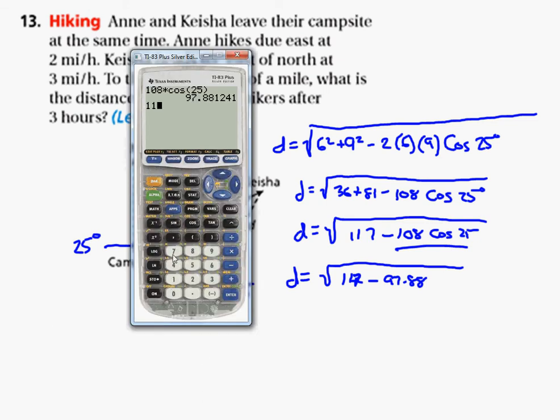Let's subtract that from 117. So we're going to go 117 minus that previous answer, which is 2nd and the little white minus key, and we wind up getting 19.12, approximately.